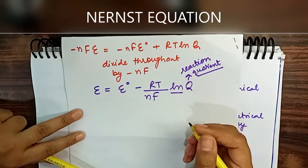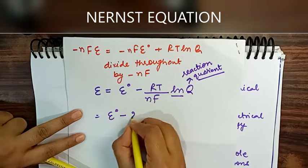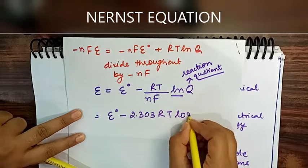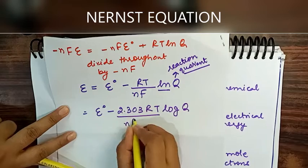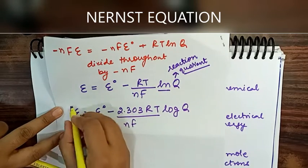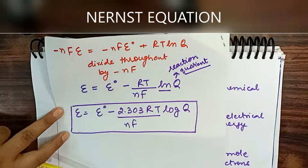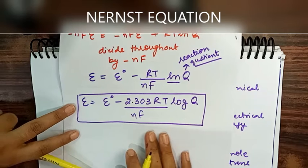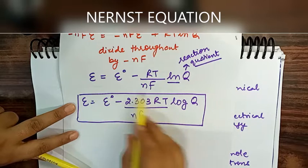Converting from natural log (ln) to base-10 log requires multiplying by 2.303, because calculations are done in base 10. This gives the Nernst equation: E = E° - (2.303RT/nF) log Q.